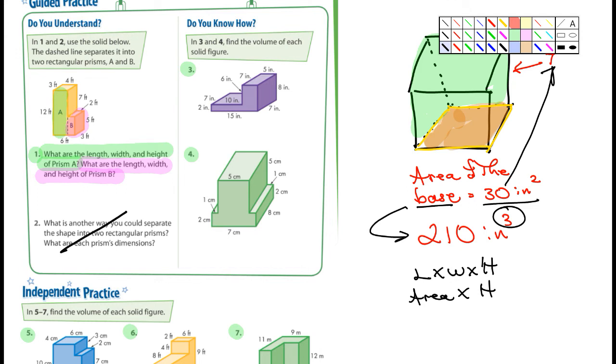Alright. Back to the work I want you guys to do. So on the guided practice in 11-3, I want you to do number one. And you can see that I've highlighted it here. And I highlighted in green A, which is right here. And then in pink, or maybe it looks purple to you guys up there, I did prism B. And then you would just add those two together.